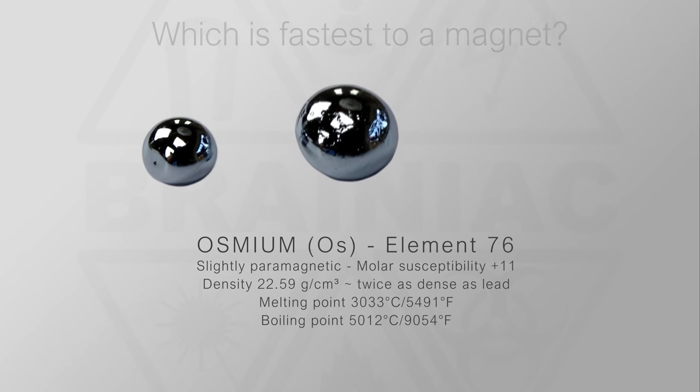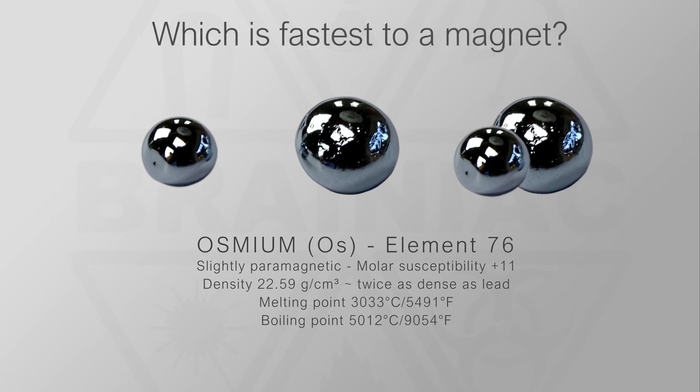Hi. It's time to answer the question I asked you in my latest video. Which is fastest to a magnet? A 1 gram, a 2 grams, or the two of them together as a 3 gram sample?